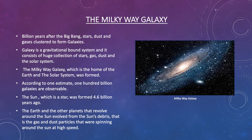According to one estimate, 100 billion galaxies are observable. The Sun, which is a star, was formed 4.6 billion years ago. The Earth and the other planets that revolve around the Sun evolved from the Sun's debris — that is, the gas and dust particles that were spinning around the Sun at high speed. Debris means remains.